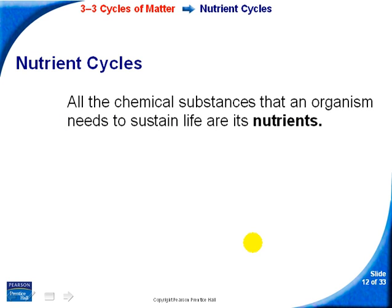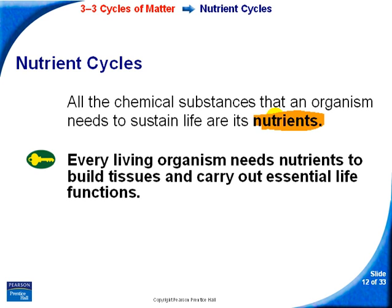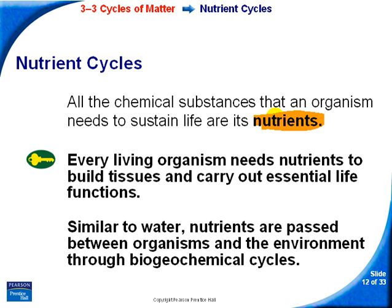How are nutrients important to the living system? All the nutrients that an organism needs are the chemical substances used for life. Every living organism needs nutrients to build tissues and carry out essential life functions. Nutrients are also passed between organisms and the environment through biogeochemical cycles.